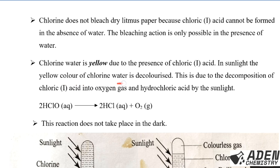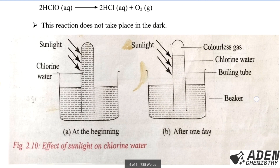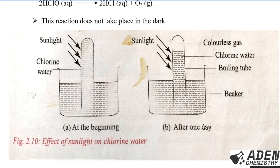In sunlight, the yellow color of chlorine water is decolorized. This is due to the decomposition of hypochlorous acid into oxygen gas and hydrochloric acid, catalyzed by UV light. The equation shows that two moles of hypochlorous acid decompose under UV light to give two moles of hydrochloric acid and one mole of oxygen gas. This reaction does not take place in the dark.